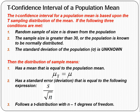If three conditions are true: you have to have a random sample of size n, the sample size is greater than 30, or like the z-confidence interval, the population is known to be normally distributed, and the standard deviation of the population is unknown. That's what's different between the z-interval and the t-interval.